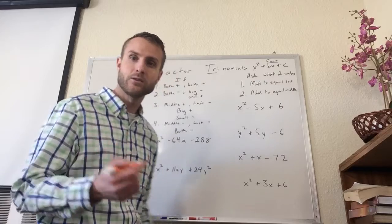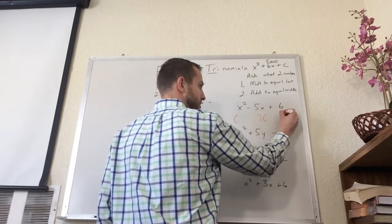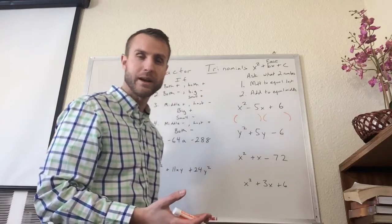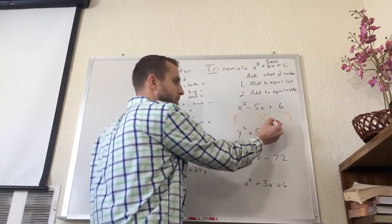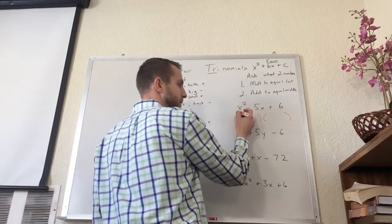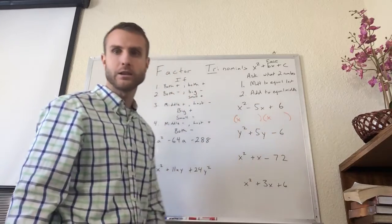So anytime I factor these, what I'm going to do is I'm going to start off writing two parentheses. Make sure there's nothing between because these two are being multiplied by each other. So I have two parentheses and then I'm going to start off by using whatever letter is being squared. I'm going to write that letter once at the beginning of each parenthesis.